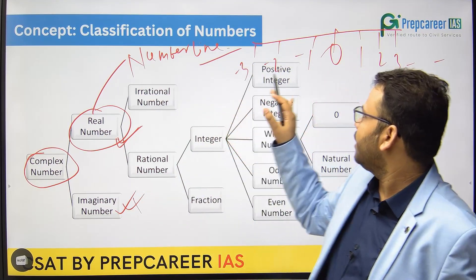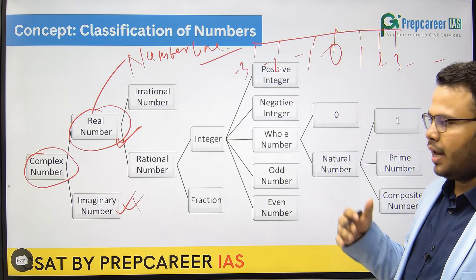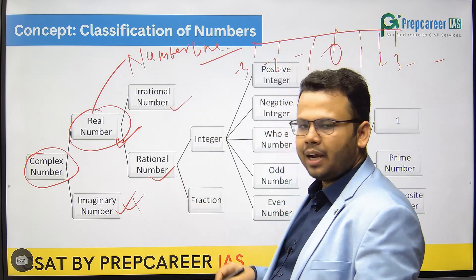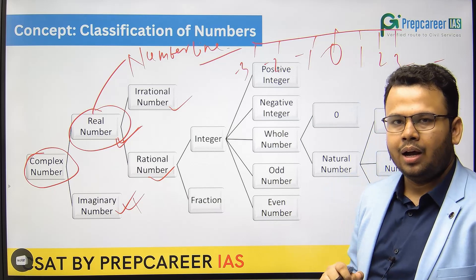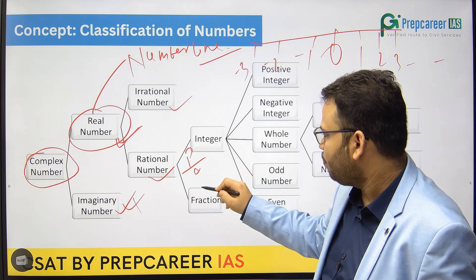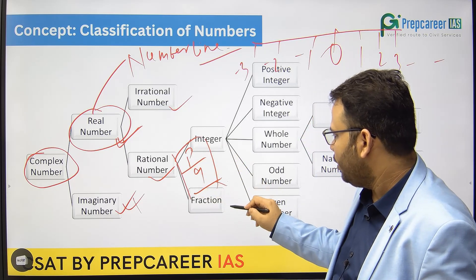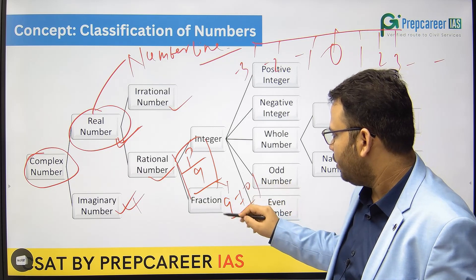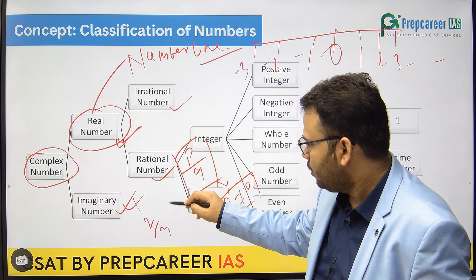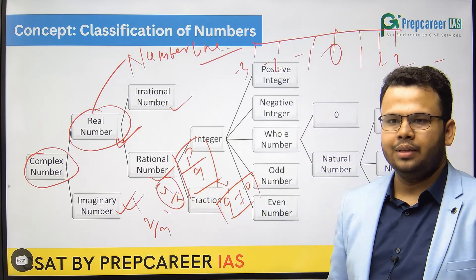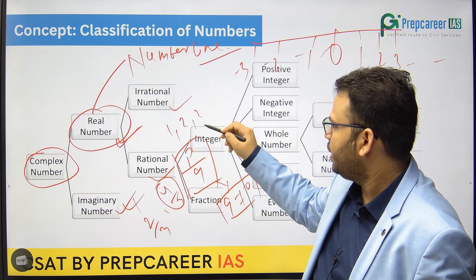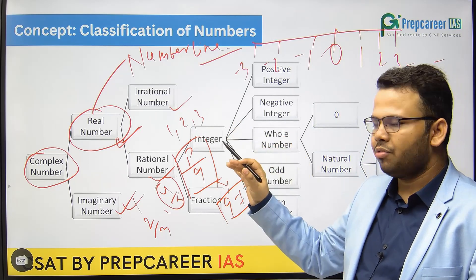Now, real numbers — the numbers that are on the number line — are again divided into two parts. The first one is the rational number and the second one is the irrational number. Rational numbers are those numbers which can be written in the form of P/Q, where Q is not equal to 0. For example, 2/3 and 4/5 are rational numbers. Even integers like 1, 2, 3, etc. are all part of rational numbers.